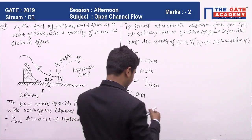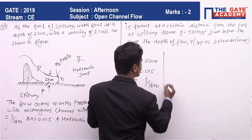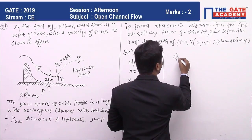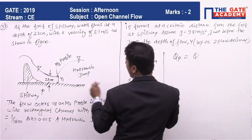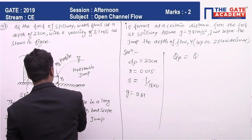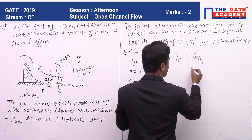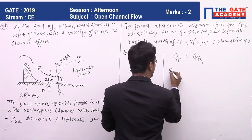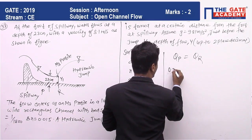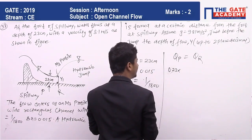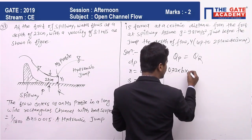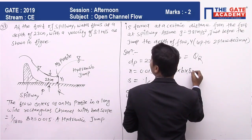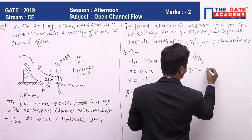So QP at point P will equal QR at the required point. QP = A × V, so A = 0.23 (depth) × B, and V is given as 8.1.